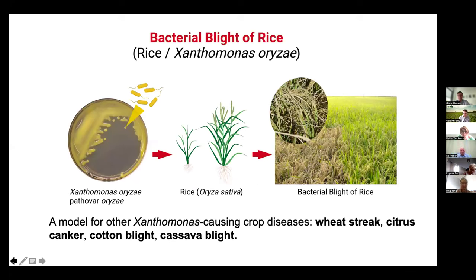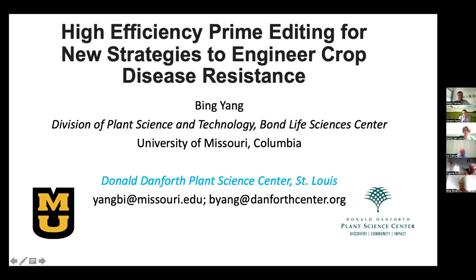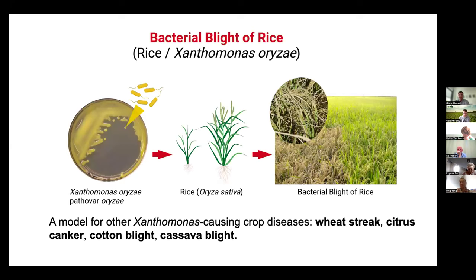Today I'm going to talk about prime editing — we developed and established this for rice and are trying to use this technology for engineering disease-resistant bacteria blight of rice. Rice is particularly affected by this disease in Asia and Africa, and the pathogen is caused by Xanthomonas oryzae pv. oryzae, which we call XOO for short.